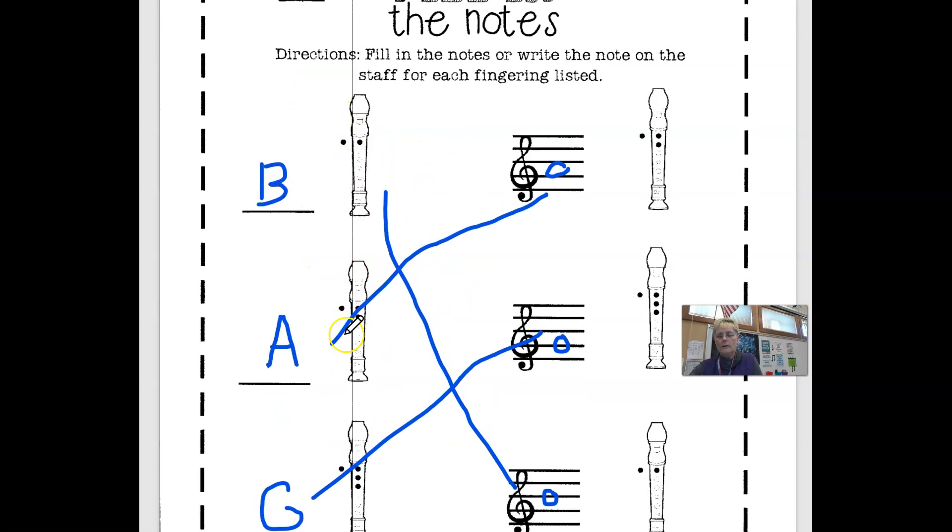So like there's a B, there's an A, there's a G. Let me take the lines off really quick, I'm going to erase the lines. So erase that line, erase this line, erase this line, there we go.